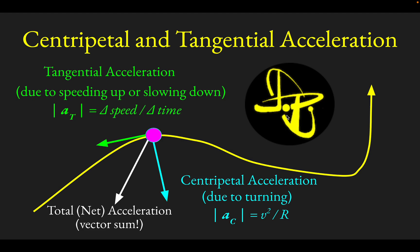There are two types of acceleration: one called centripetal acceleration, which is an acceleration you get anytime something is turning, and tangential acceleration, which is what you have when something is either speeding up or slowing down.